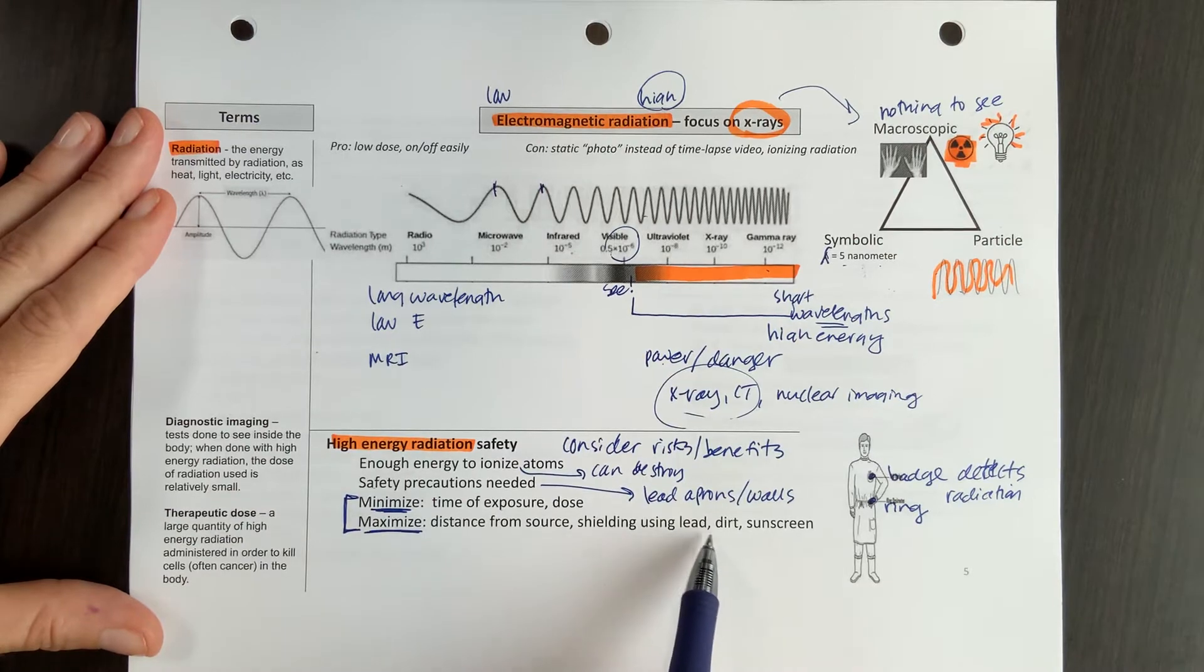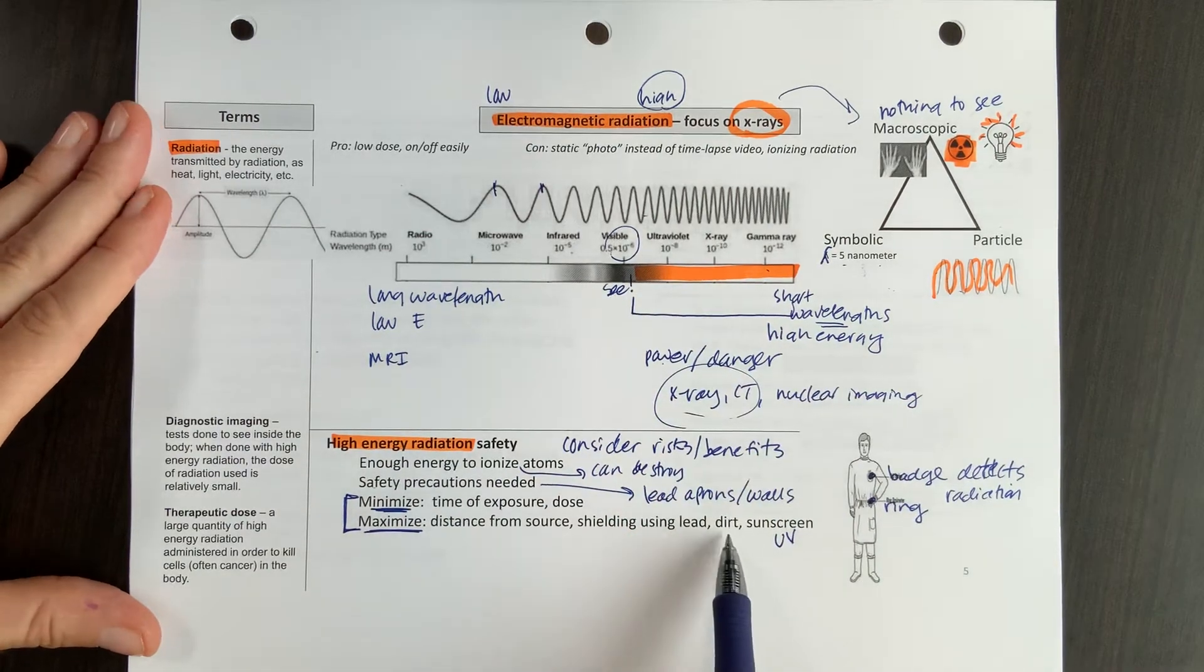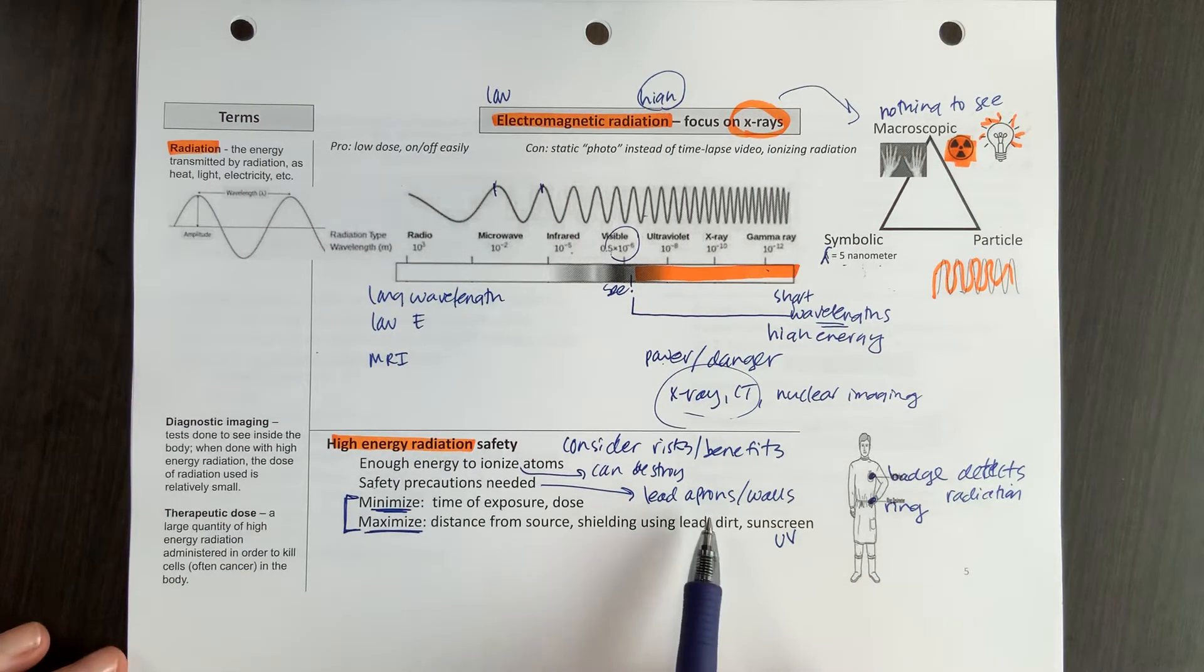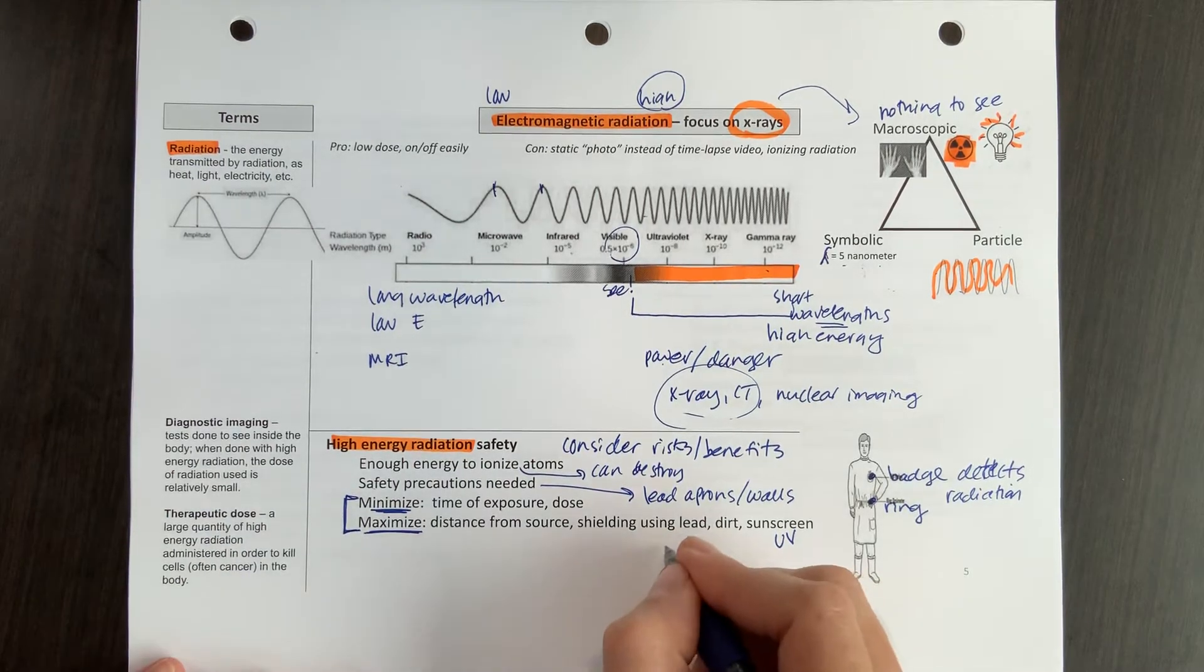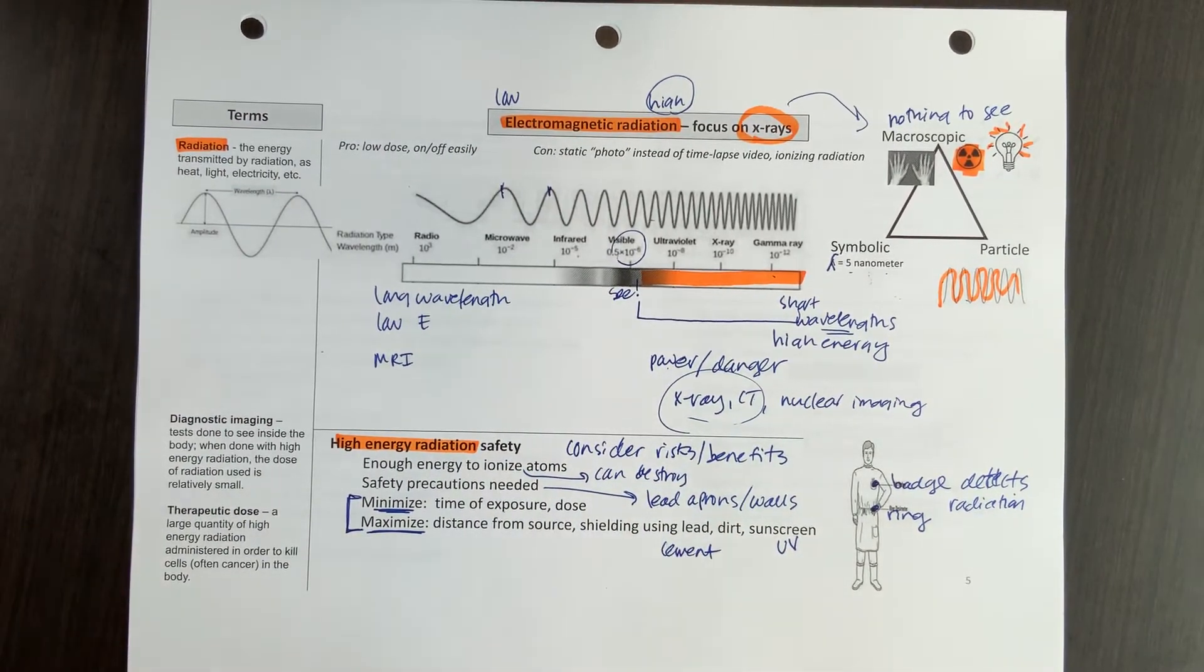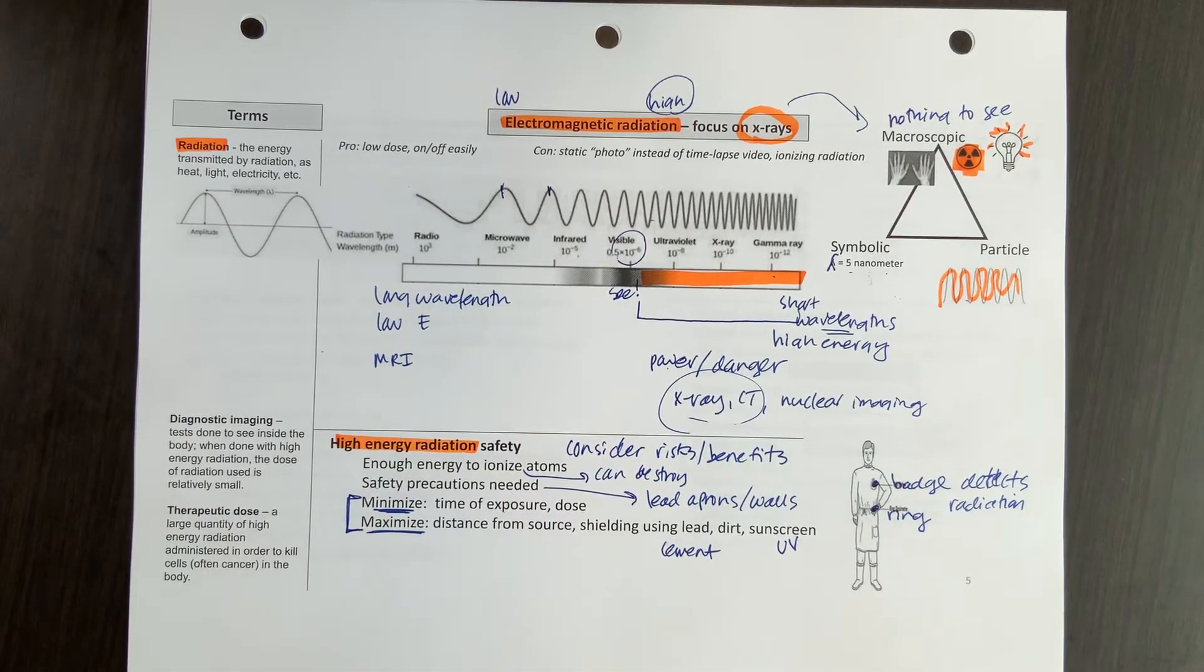Shield using lead or dirt or sunscreen. We use sunscreen to shield ourselves from ultraviolet, which is right here. Dirt. You're going to find that all of the nuclear imaging is usually found in either the basement or the ground floor so that you've got some dirt protecting you. Another thing that is used to shield radiation is cement. So if you go to somewhere where they have radiation therapy for cancer, you've got huge, like, four-foot-thick cement walls usually to shield so that radiation doesn't get out. So to be safe, you're going to minimize time and dose. You're going to maximize how far you are. You're going to shield yourself. You're going to maybe use sunscreen, which is a chemical way of shielding it.